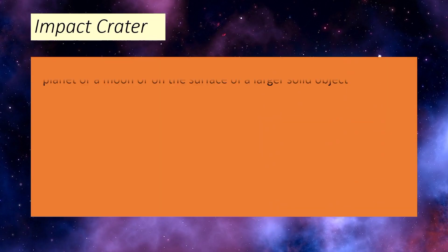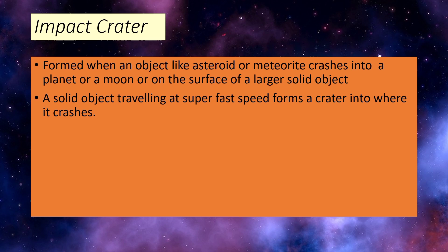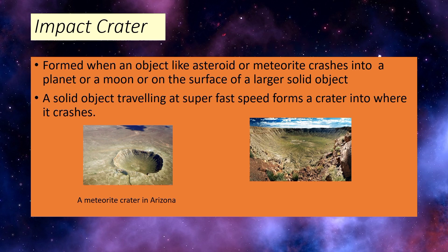Impact craters are formed when an object like an asteroid or meteorite crashes into a planet, a moon, or the surface of a larger solid object. This happens when that solid object travels at super fast speed, forming a crater where it crashes. The diagrams here show a meteorite crater in Arizona and a crater formed from an asteroid.